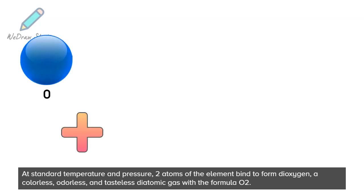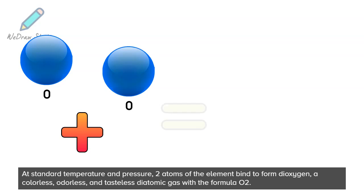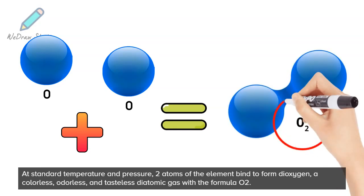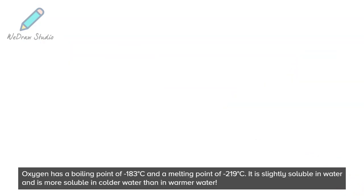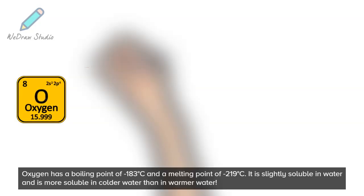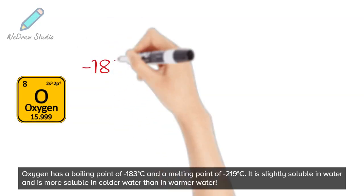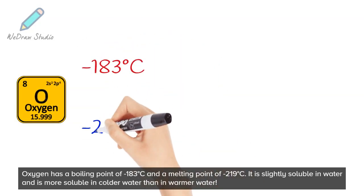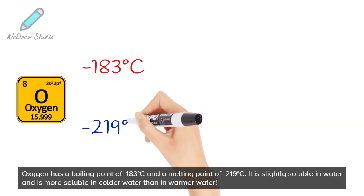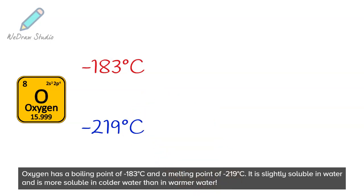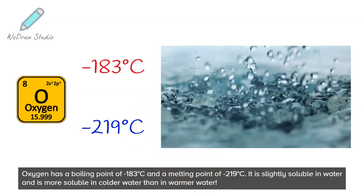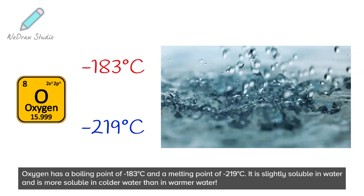At standard temperature and pressure, two atoms of the element bind to form dioxygen, a colorless, odorless, and tasteless diatomic gas with the formula O2. Oxygen has a boiling point of minus 183 degrees Celsius and a melting point of minus 219 degrees Celsius. It is slightly soluble in water and is more soluble in colder water than in warmer water.